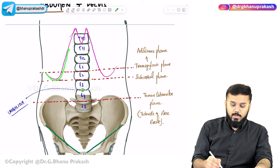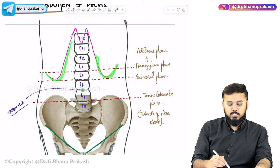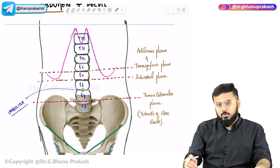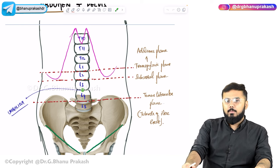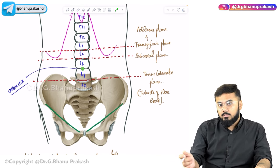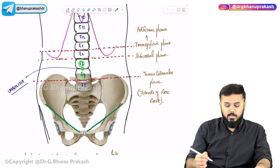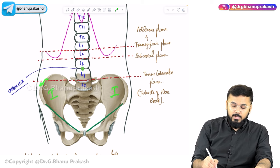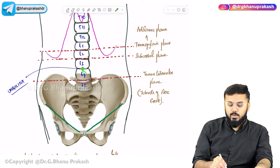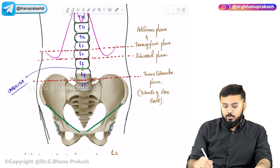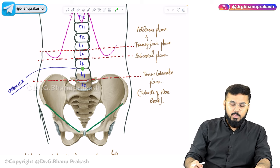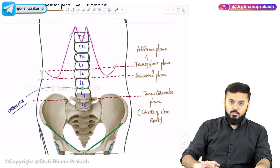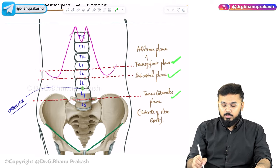The coastal margin consists of two U-shaped structures on either side. Just beneath the coastal margin, between L2 and L3, is the sub-costal plane. One vertebral level above the sub-costal plane is the transpyloric plane. The umbilicus is located between L3 and L4. The trans-tubercular plane, formed by connecting the two iliac tubercles, lies between L4 and L5. L4 is the highest point of the iliac crest. So remember three planes: transpyloric, sub-costal, and trans-tubercular.